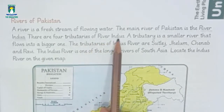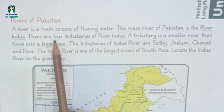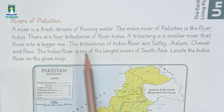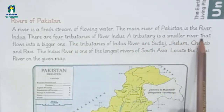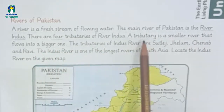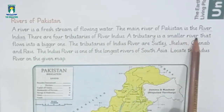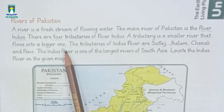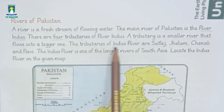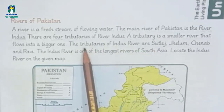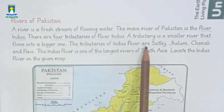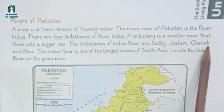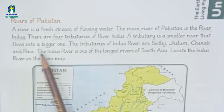There are four tributaries of River Indus. We have studied in our vocabulary: a tributary is a smaller river that flows into a bigger one. The tributaries of the Indus River are: Satloj, Chelam, Chenab, and Ravi. These are the four tributaries.